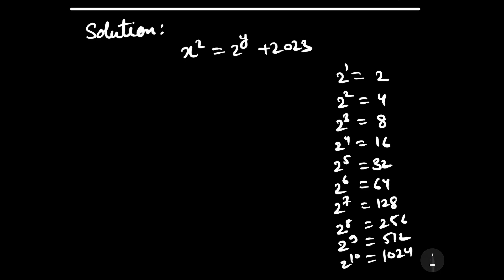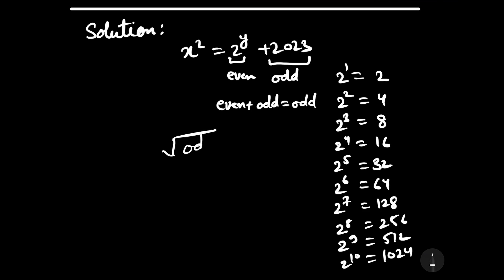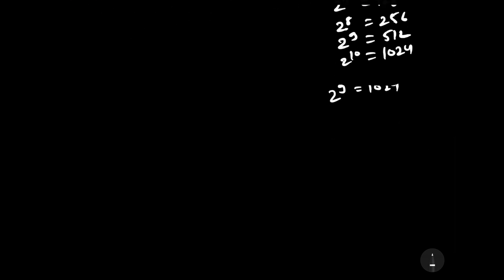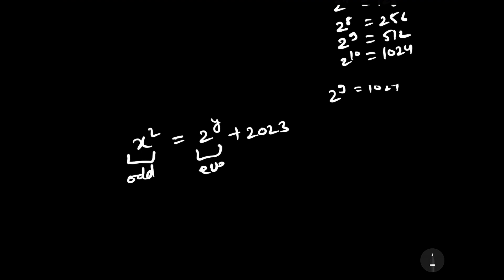Clearly, you can see that whatever the power of 2 is, it will always be even. So 2^y will be even since y is a natural number. And 2023 is odd. We know that even plus odd always gives odd, and the square root of an odd number is odd — so x must be odd.